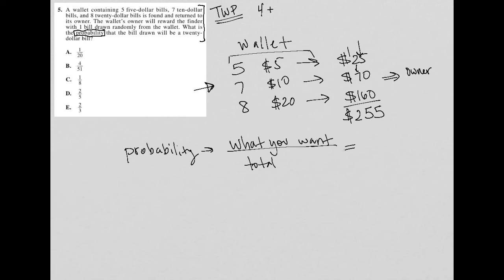Well, how many twenty dollar bills do we have? We have eight twenty dollar bills, right? So for what we want, there are eight of those. There are eight twenty dollar bills.